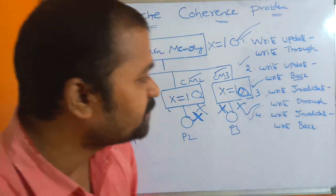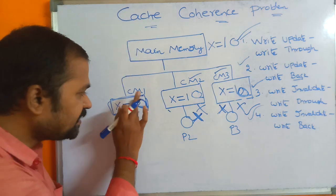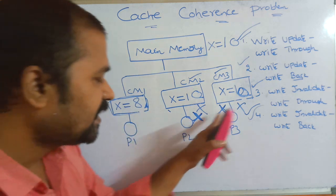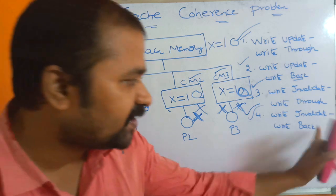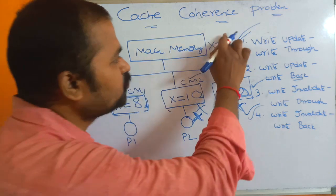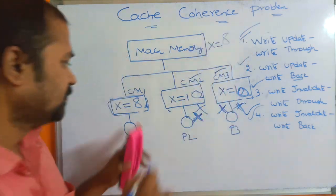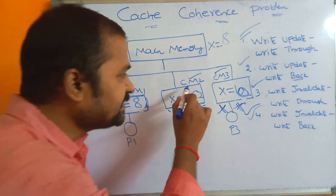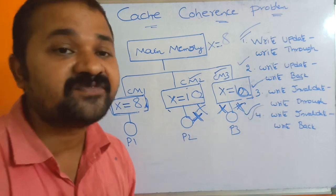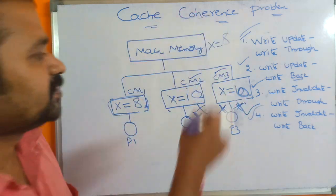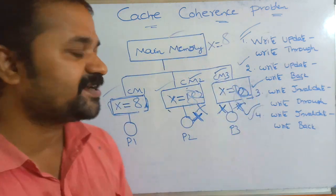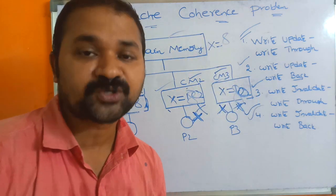The last approach is write invalidate + write back. Assume X = 10, and we modify X to 8 in one cache. Write invalidate means other caches are invalidated. Write back means X = 8 is written to main memory only when replacement occurs. When the invalidated cache memories want to access X, they read from main memory where X = 8. So in main memory and all cache memories, X = 8, and in this way we can solve the cache coherence problem.